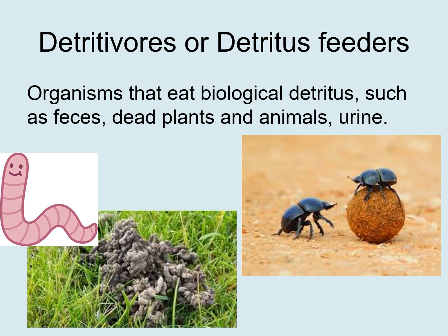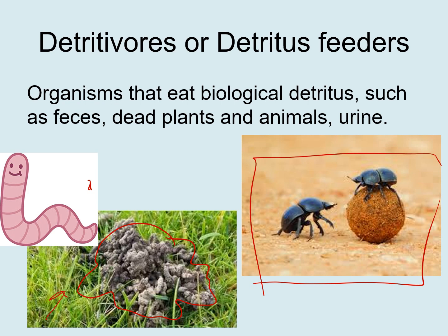Let's have a quick review. Detritivores, or detritus feeders, are organisms that eat biological detritus such as faeces, dead plants and animals, and urine. Here are two examples. Worms — if you've ever noticed those little piles on the lawn, that's actually worm castings, basically worm poo. They eat dead plant matter and take in a bit of soil, and leave their castings underground, though sometimes when the weather is damp they come up to the surface. Dung beetles consume faeces from primary consumers, which is quite high in plant matter. They roll it into a ball and lay their eggs inside so that the new larvae that hatch have plenty of food to eat.